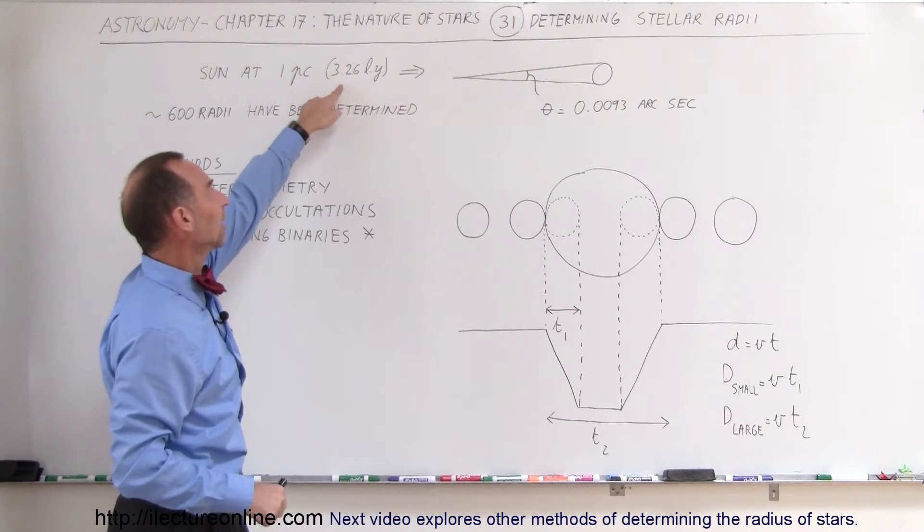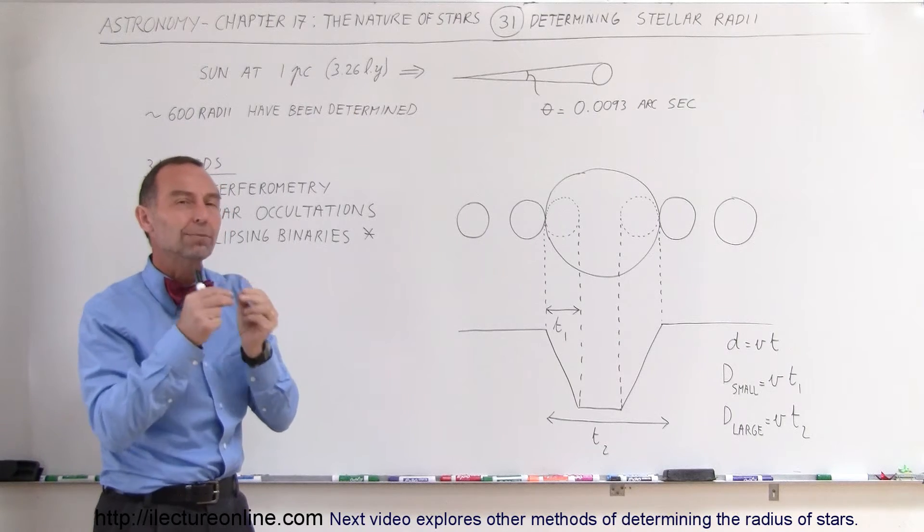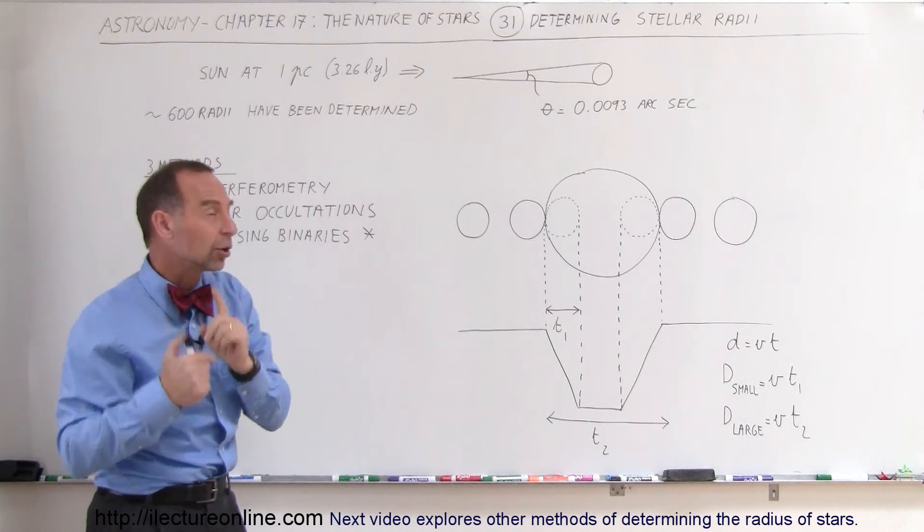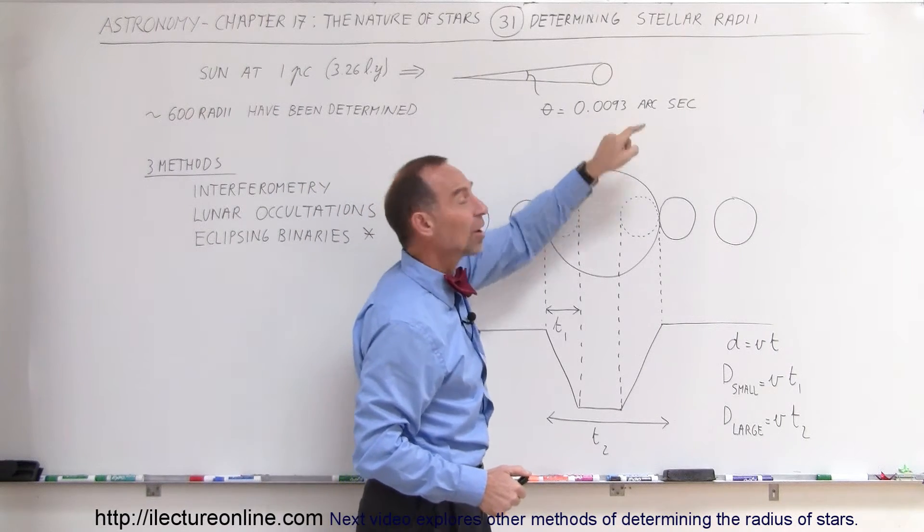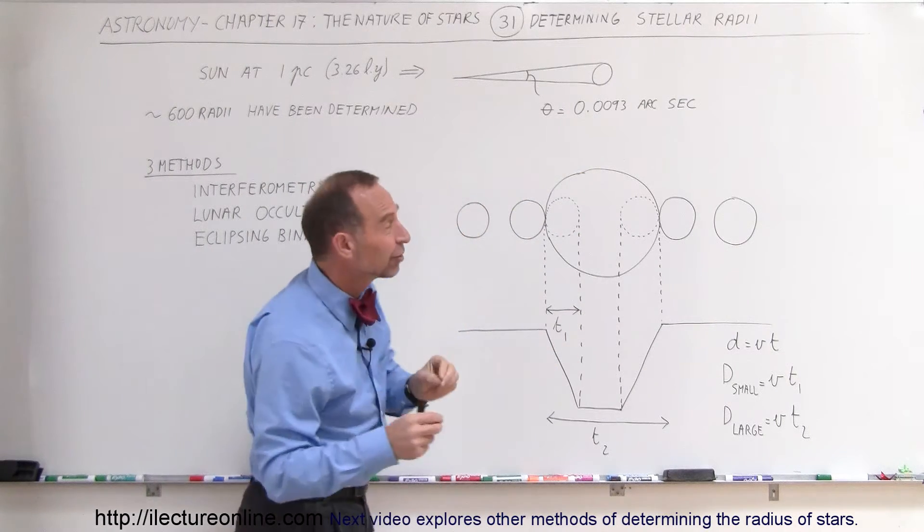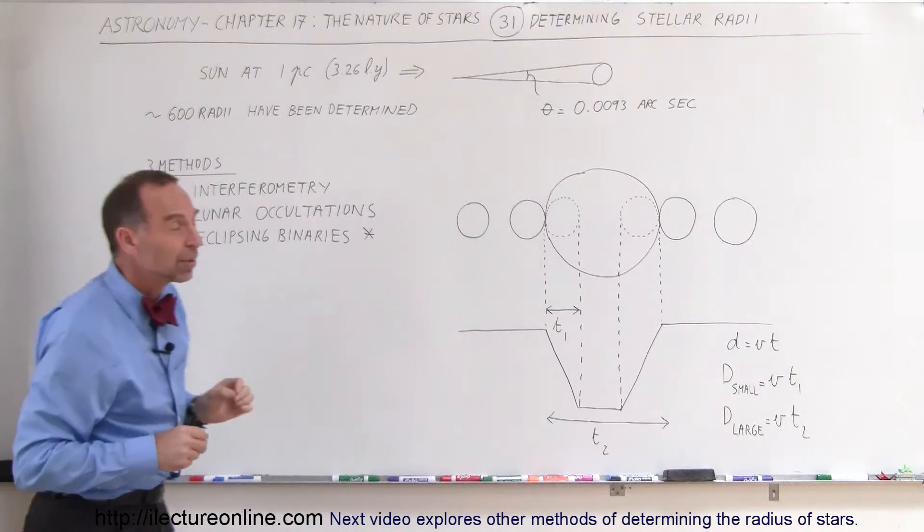So if we take a star like the sun and we move it just one parsec away, which is closer than the closest star, the angular size of the sun would be 0.0093 arc seconds.